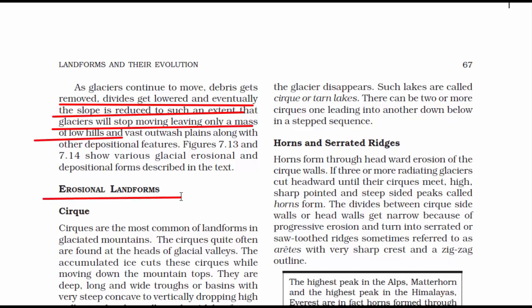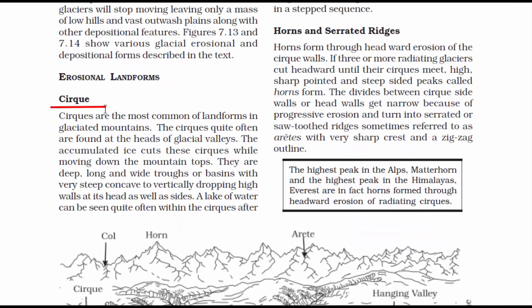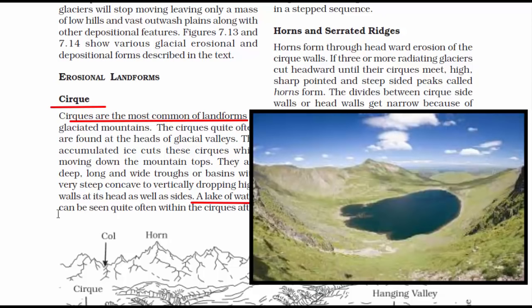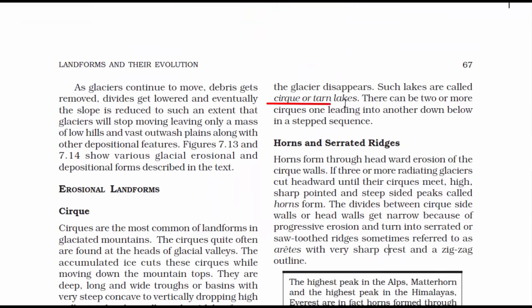Now we will read about the types of erosional landforms caused by glaciers. The first one is cirque. It is a valley formed by glacial erosion and is the most common landform in glaciated mountains. Cirques are quite often found at the heads of glacial valleys. When the ice slowly moves down the slope of the mountain, the accumulated ice cuts the slopes in a cup shape called cirques. A lake of water can often be seen within the cirques after the glaciers disappear — this lake is called a Tarn Lake.